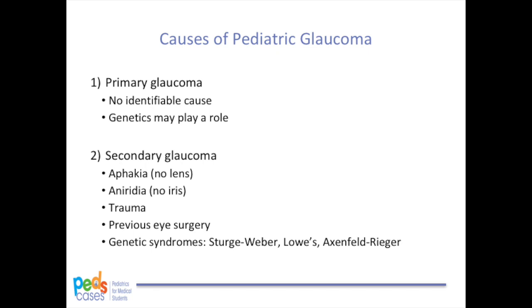Another way of classifying glaucoma is based on etiology as primary or secondary. Primary glaucoma is caused by a primary ophthalmologic cause with no other identifiable cause or systemic symptoms. Several theories exist for the mechanism of primary congenital glaucoma, including formation of a membrane covering the anterior chamber angle, trabecular meshwork obstruction, or developmental arrest of the anterior chamber tissue in utero. Most cases are sporadic, but about 10% of primary congenital and infantile glaucoma cases are inherited, with a higher risk in consanguineous families.